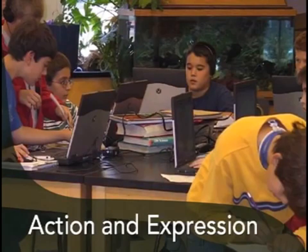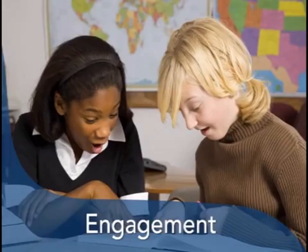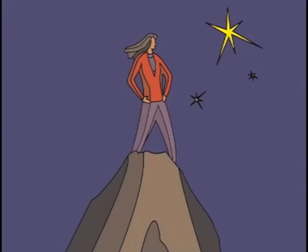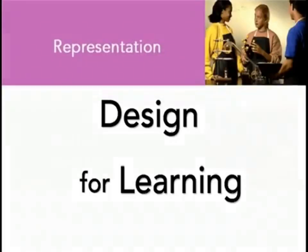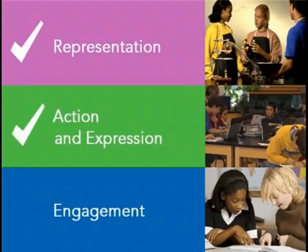Number two: provide multiple means of action and expression — give students options for expressing what they know, and provide models, feedback, and supports for different levels of proficiency. Number three: provide multiple means of engagement — what fires up one student won't fire up another, so give students choices to fuel their interest and autonomy, help them risk mistakes and learn from them. Always keep in mind the learning goal — get rid of barriers caused by the curriculum and keep the challenge where it belongs. Quick recap: show information in different ways, allow students to approach tasks and demonstrate knowledge in different ways, and offer options that engage and sustain their interest.